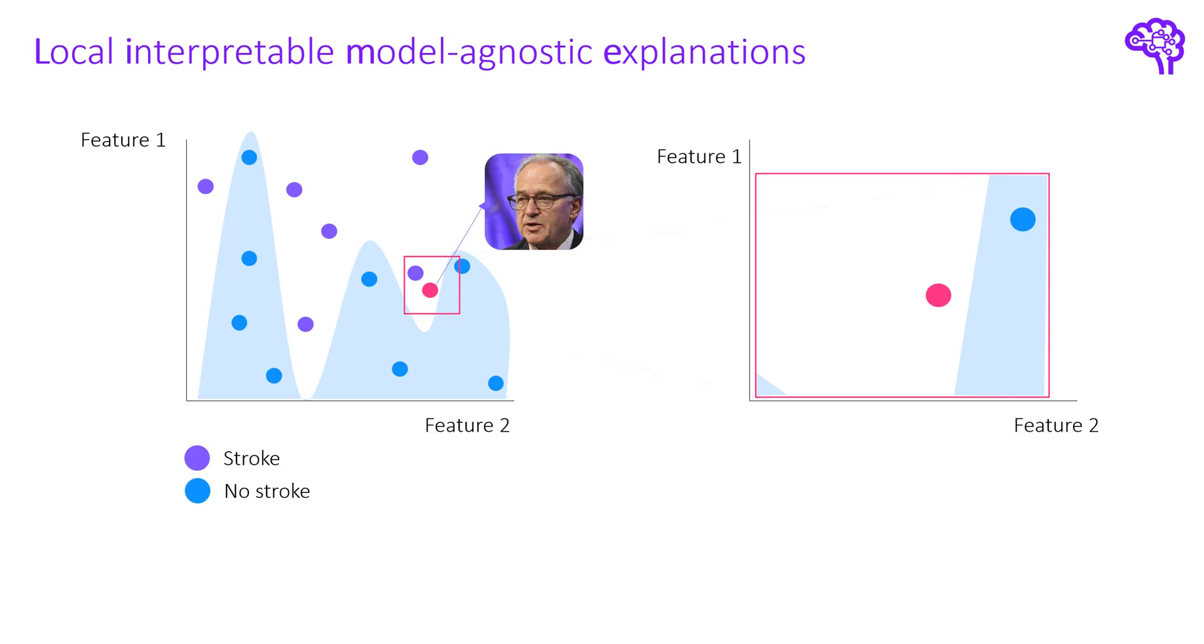For instance, in this example we could say that the prediction was made because the value of feature 2 was small enough to fall on the left side of this dashed line. We can also say something about the importance of our variables. Certainly feature 2 here mainly determines our output class and changes in feature 1 almost have no impact.